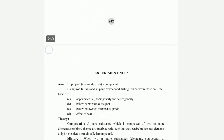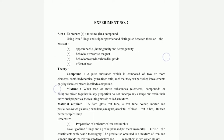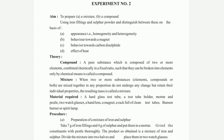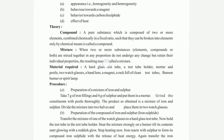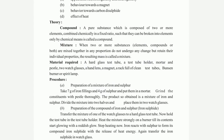Next is experiment number 2: to prepare a mixture and compound. I use iron filings and sulfur powder and distinguish between these on the basis of homogeneity, heterogeneity, behavior towards a magnet, behavior towards carbon disulfate, and effect of heat — distinguishing compound from mixture. Materials required are listed.